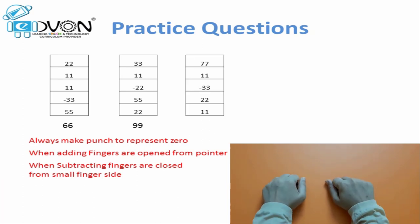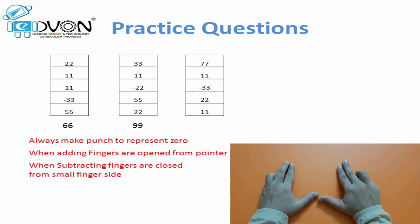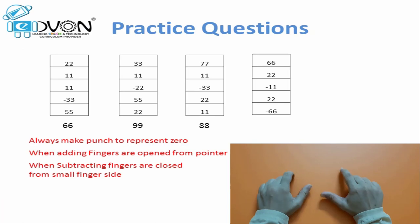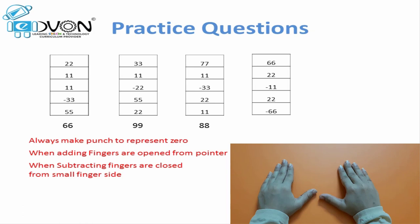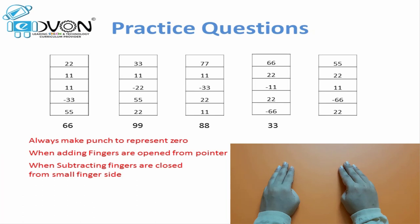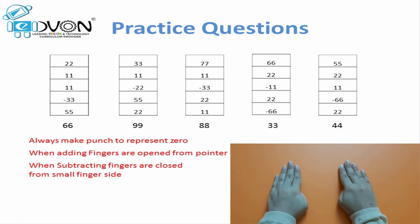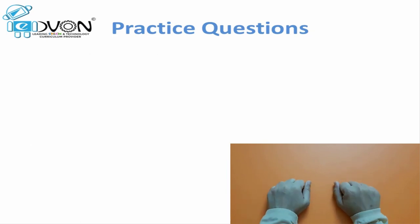Next question: 77 plus 11 minus 33 plus 22 plus 11. The answer is 88. Next question: 66 plus 22 minus 11 plus 22 minus 66. The answer is 33. Next: 55 plus 22 plus 11 minus 66 plus 22. The answer is 44.